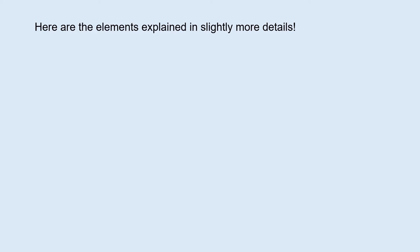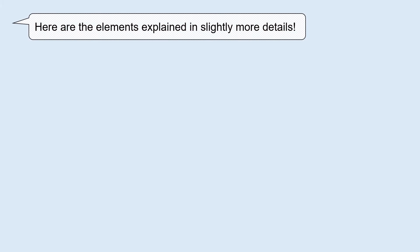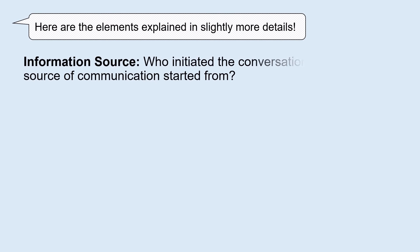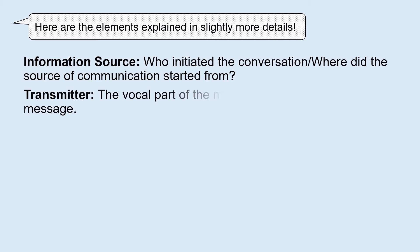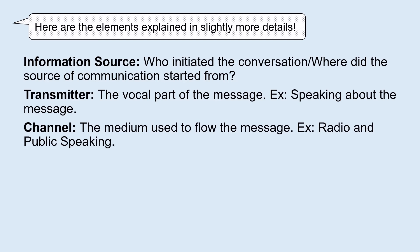Here are the elements explained in slightly more detail. Information source: who initiated the conversation — where did the source of communication start from? Transmitter: the vocal part of the message, like how I am speaking about this message towards you, the viewers. Channel: the medium used to flow the message, like radio, public speaking, or this video that you are watching.